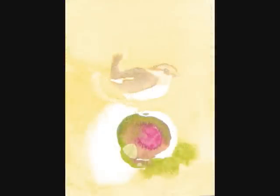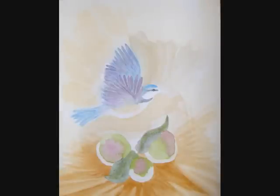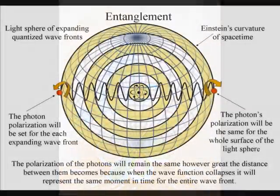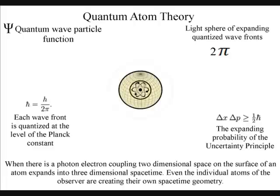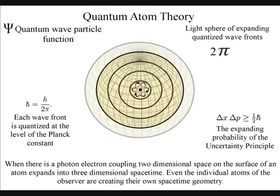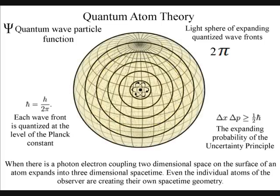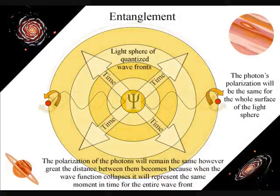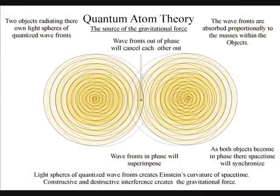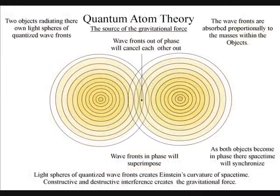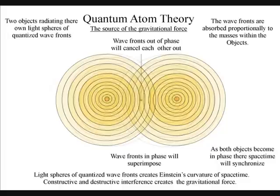This can also explain why light is so beautiful when it strikes an object — it is because we are looking at a moment of pure creation of time and space. We have entanglement because the polarization will be set at the creation of each expanding wavefront. The wavefront will expand in the form of the light sphere, and the polarization will remain the same for the entire surface of the light sphere, no matter how large it becomes. When the wavefronts of two spheres come in contact, the wavefronts out of phase will cancel each other out, and the waves in phase will superimpose.